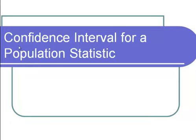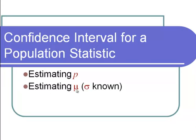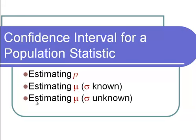This video is a lecture on finding a confidence interval for a population statistic. We're going to be estimating the population proportion using a confidence interval, and estimating the population mean using a confidence interval when the population standard deviation is known. We'll also look at estimating the population mean when we don't know the population standard deviation, and we'll be investigating the sample size.